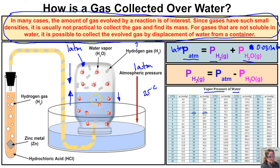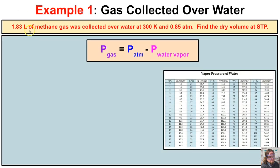With this concept in hand, we can now solve stoichiometric problems — for example, figuring out how much reactant was consumed based on moles of gas collected. In Example 1: 1.83 liters of methane gas was collected over water at 300 K and 0.85 atmospheres. We want to find the dry volume of methane at STP, where T = 273 K and P = 1 atm.